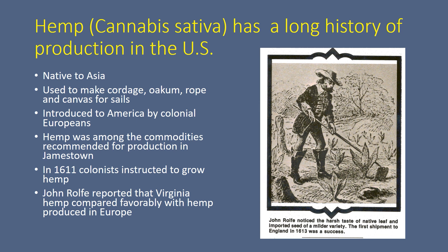Hemp has been around for a long time. It is native to Asia and if we look in the history books we can see that it's being mentioned as far back as five to ten thousand years ago. It's been used to make several items that were important in everyday life from then until now. It was brought to America by colonial Europeans, and it was one of the commodities that was recommended for production in Jamestown — farmers were instructed to grow it then.